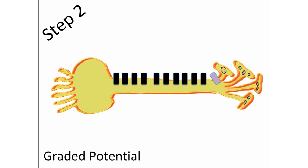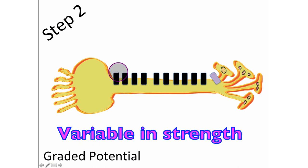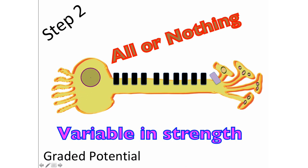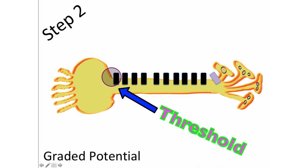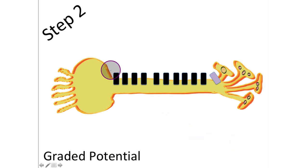Next, let's talk about what's known as a graded potential. A graded potential is similar to an action potential but with differences — it is a depolarization event followed by repolarization. A key characteristic is that graded potentials are variable in strength, whereas the action potential down the axon is an all-or-nothing event. There is a threshold value at the axon hillock — a voltage that must be achieved to open up the first voltage-gated sodium channel, generally negative 55 millivolts.